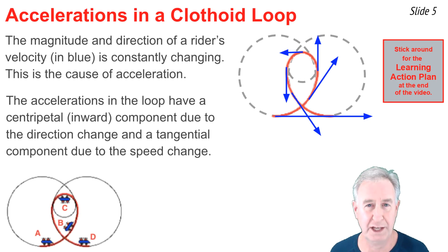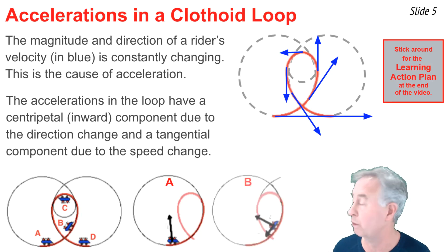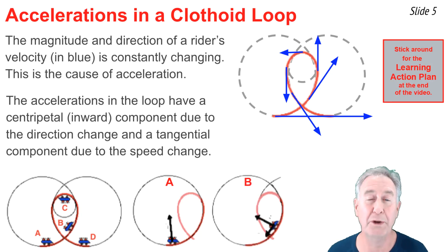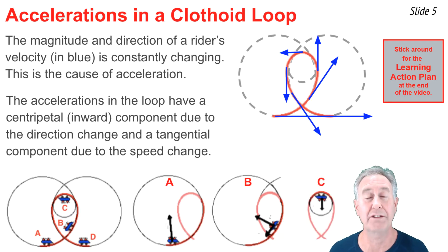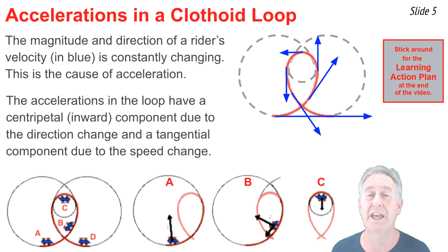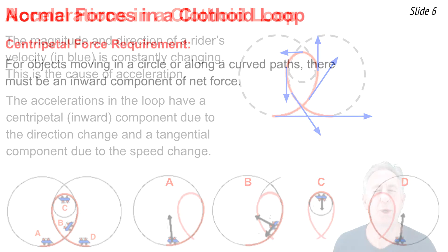Here's a diagram showing four strategic locations within a roller coaster loop. At location A, near the bottom of the loop, the acceleration is upwards towards the center of the circle. At location B, there's a centripetal component of acceleration directed towards the center of the circle, and since the rider is in the process of slowing down, there's also a tangential component that goes against the motion. At location C, the very top of the loop, the acceleration is towards the center of the circle, directed straight downwards. And finally, at location D, as the riders are just coming out of the loop, there's a strong upward component of acceleration directed towards the center of the circle.